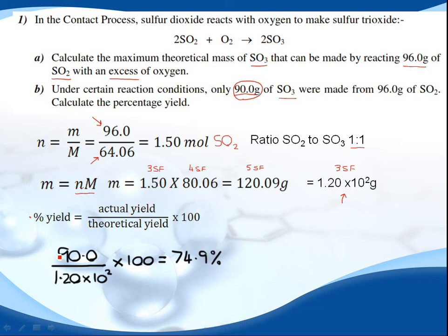We input the numbers: 90.0 divided by 1.20 times 10 to the two times 100 gives us 74.9%. That's to three significant figures because our input data here is three significant figures too.